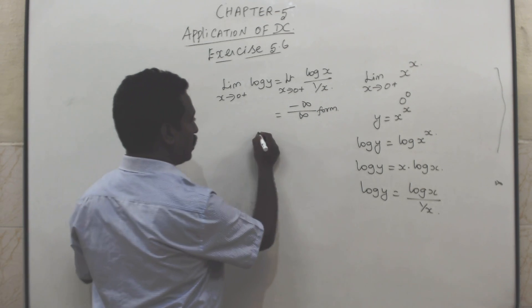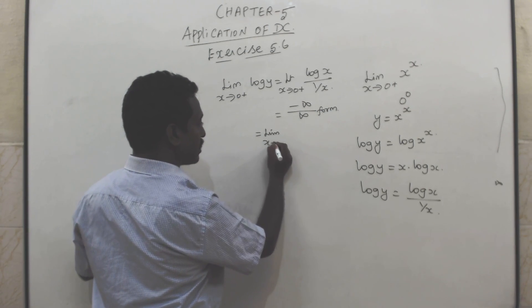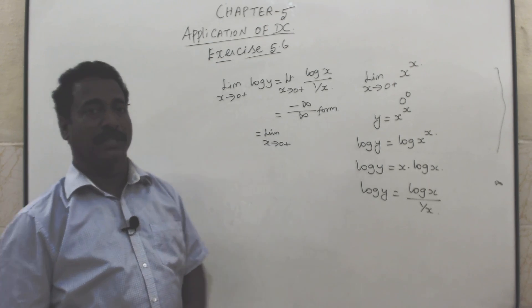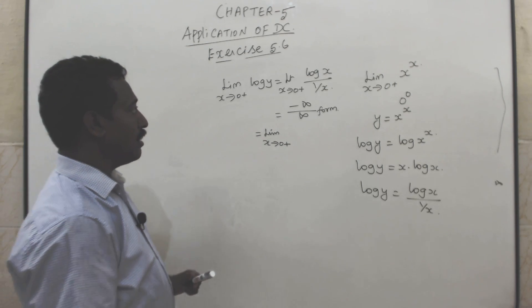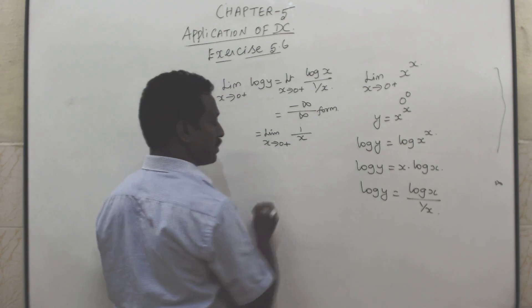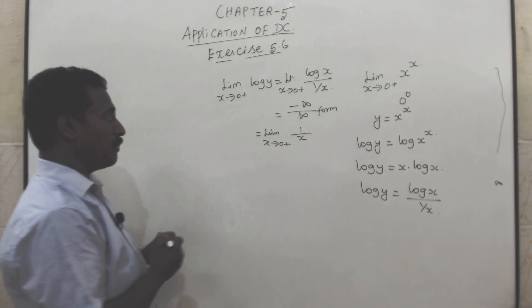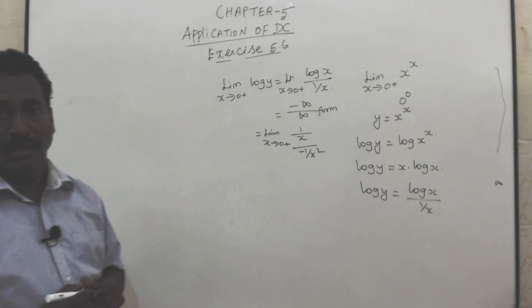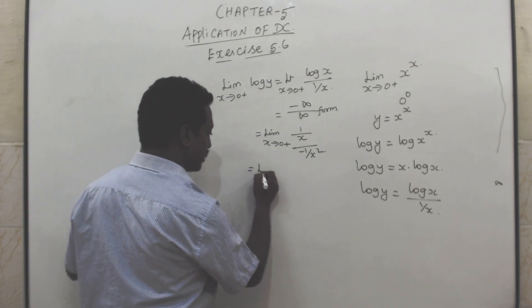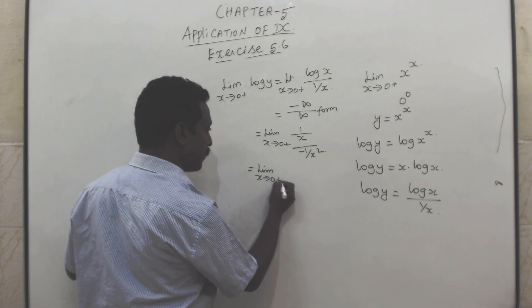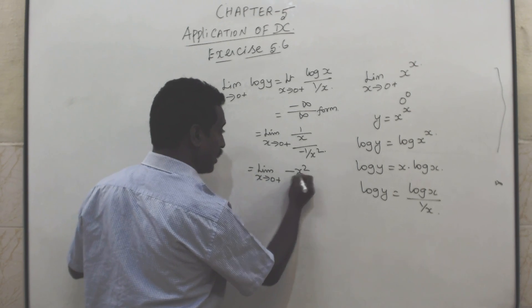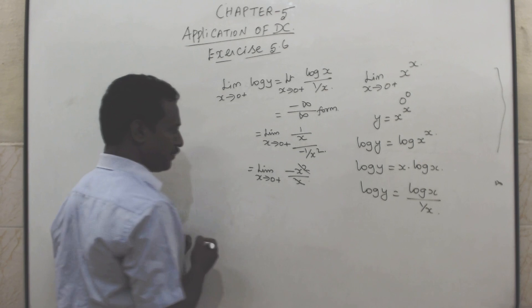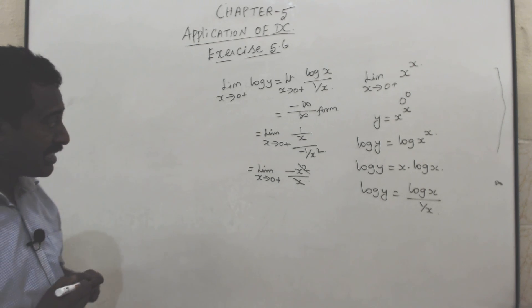Apply L'Hôpital's rule for the ∞/∞ form: limit x tends to 0 plus of log x / (1/x). Differentiating gives (1/x) / (−1/x²) = −x, and as x → 0 this equals 0.